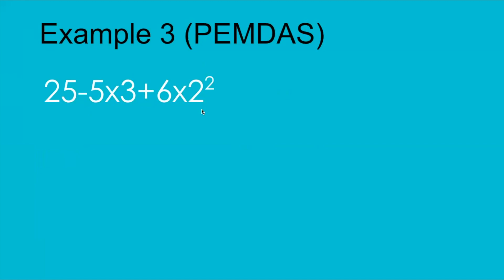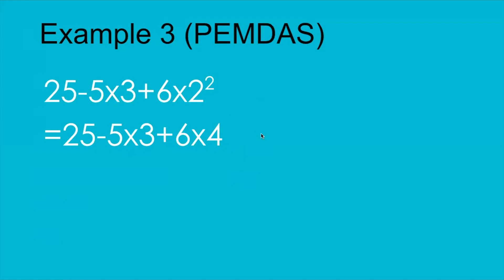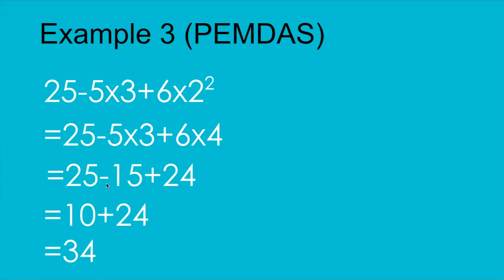Here is another example where we have an exponent. According to the rule, parenthesis comes first — we don't have parenthesis here, but we do have an exponent, so we do that first. We get: 25 − 5 × 3 + 6 × 2² → 2² = 4. Next, do the multiplications: 5 × 3 = 15 and 6 × 4 = 24, giving us 25 − 15 + 24. Going left to right: 25 − 15 = 10, and 10 + 24 = 34.